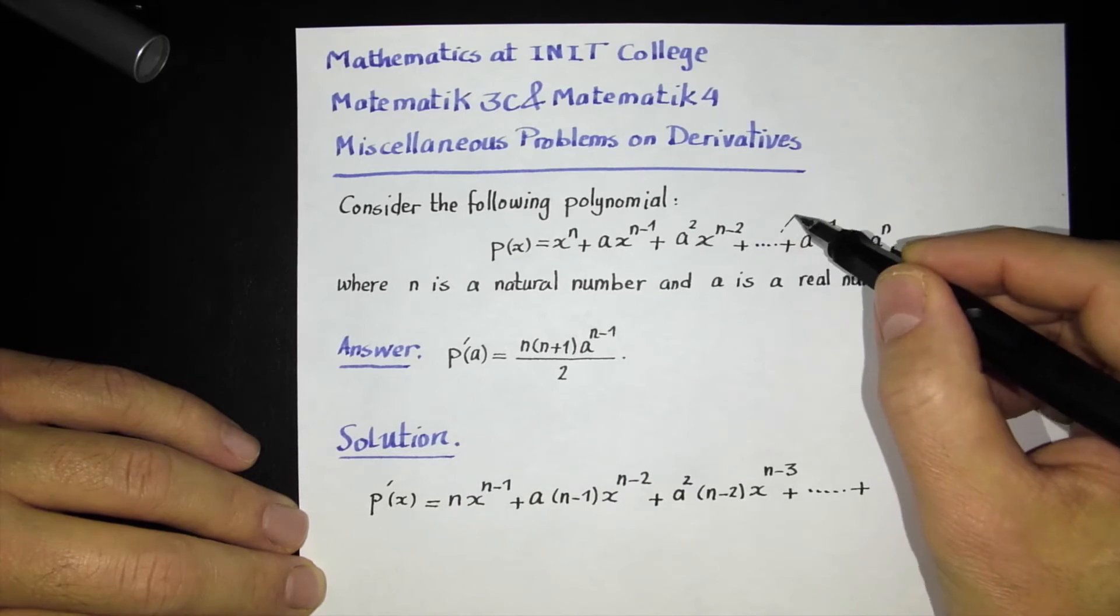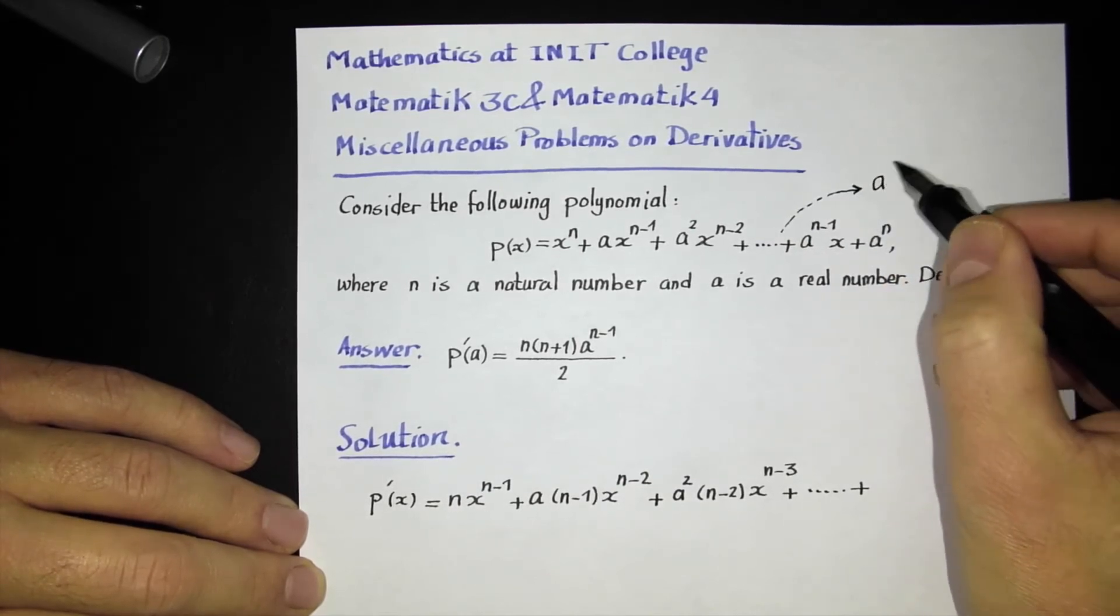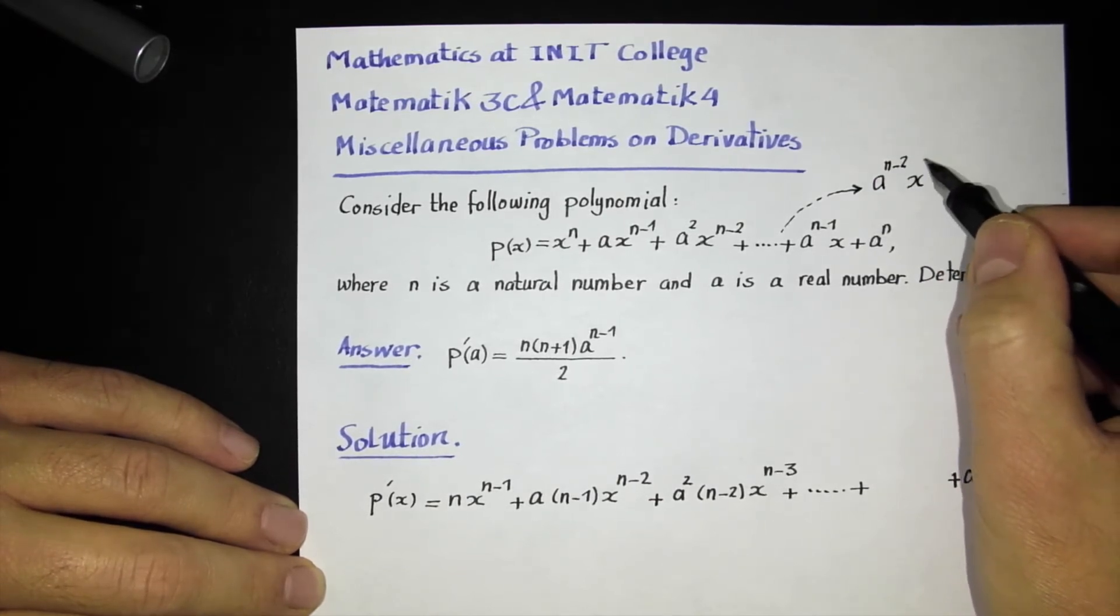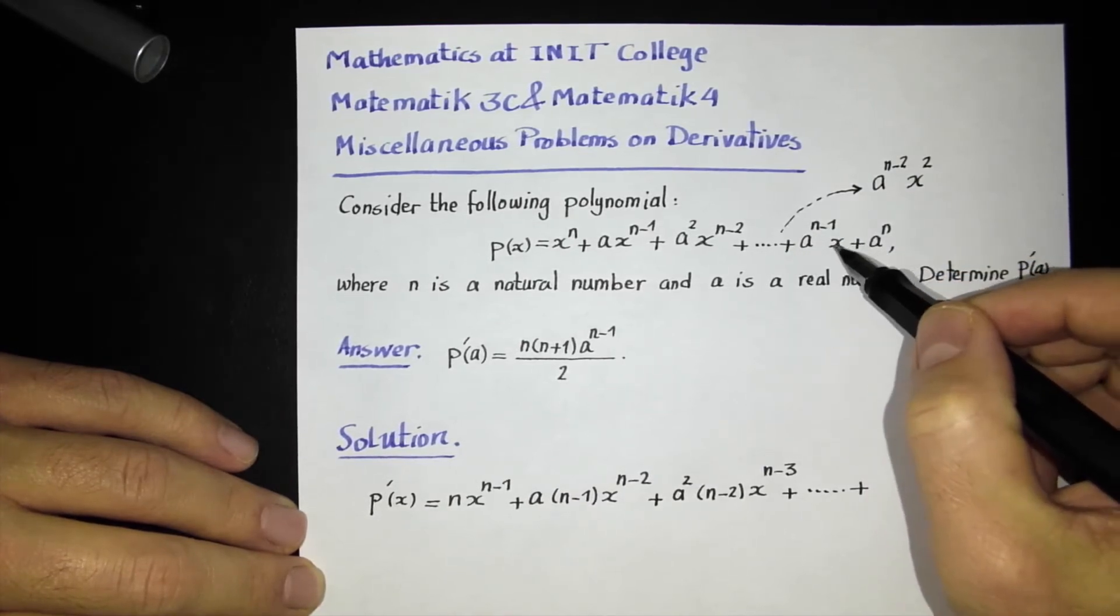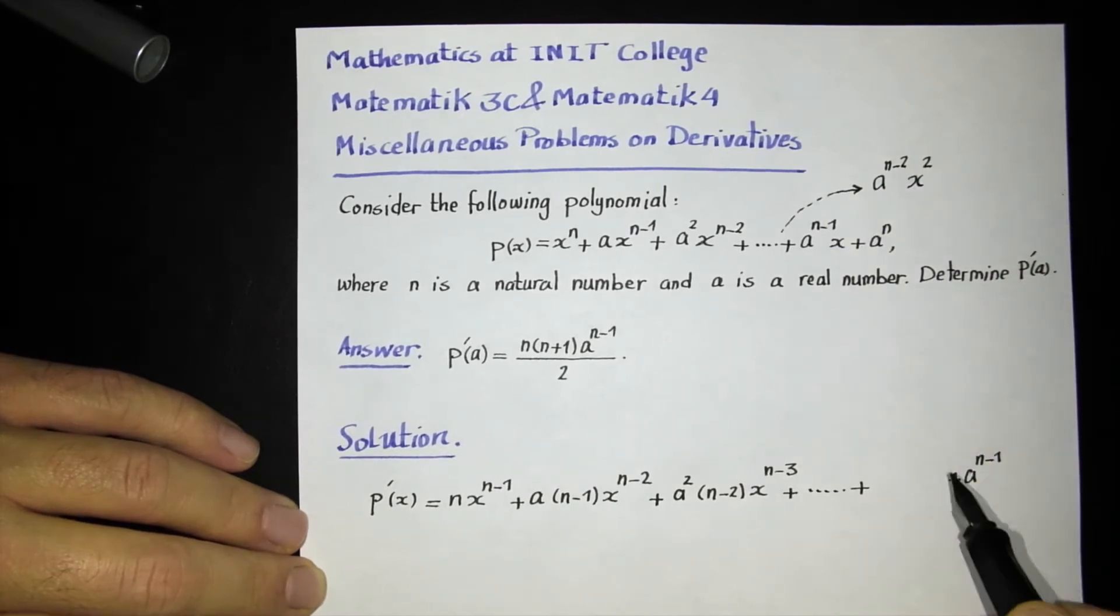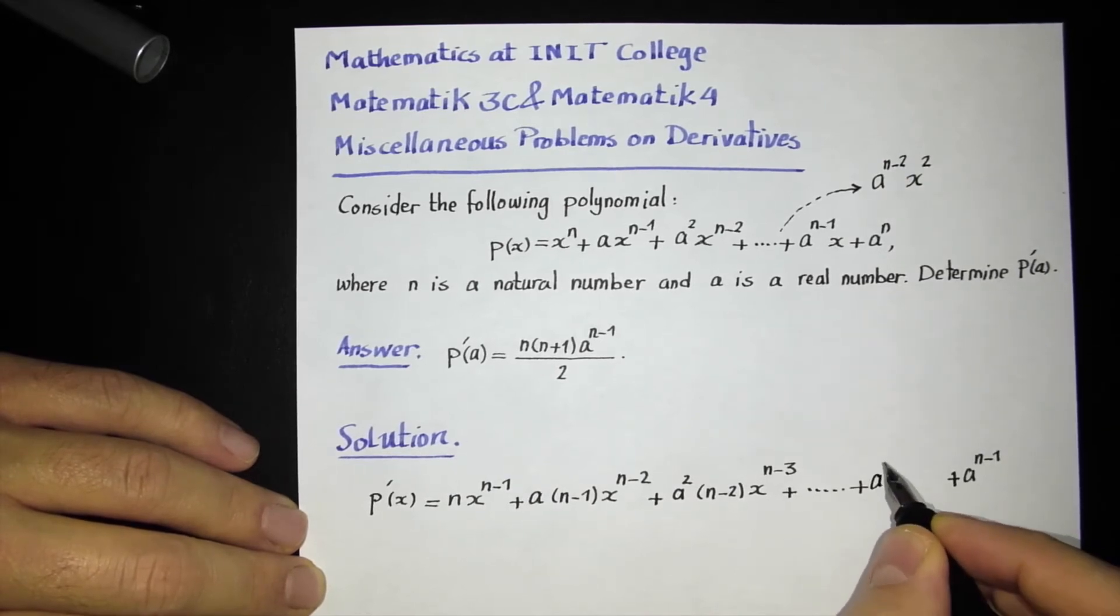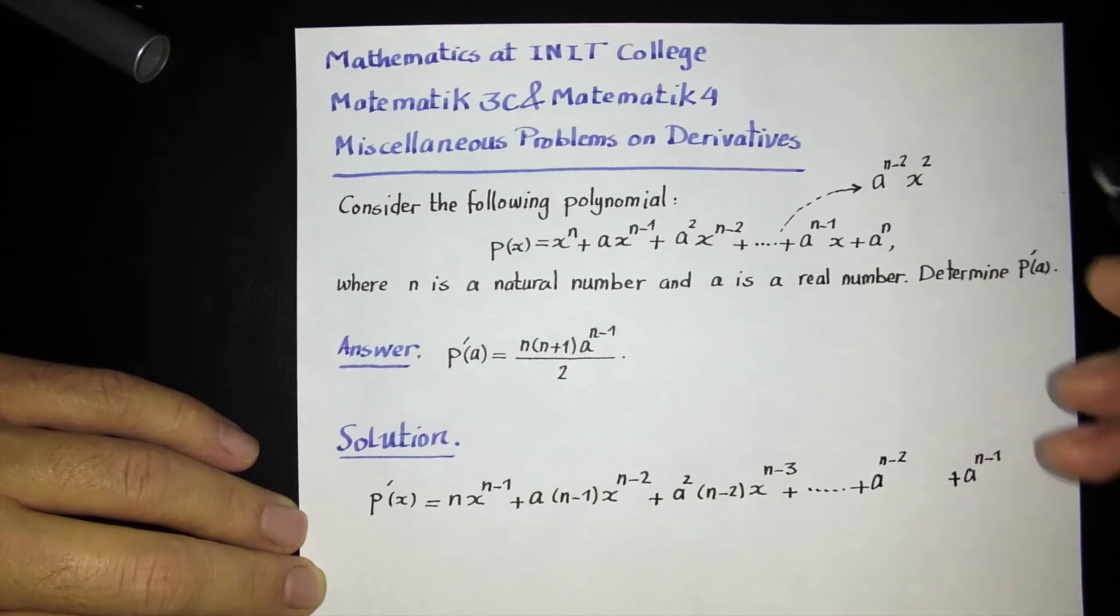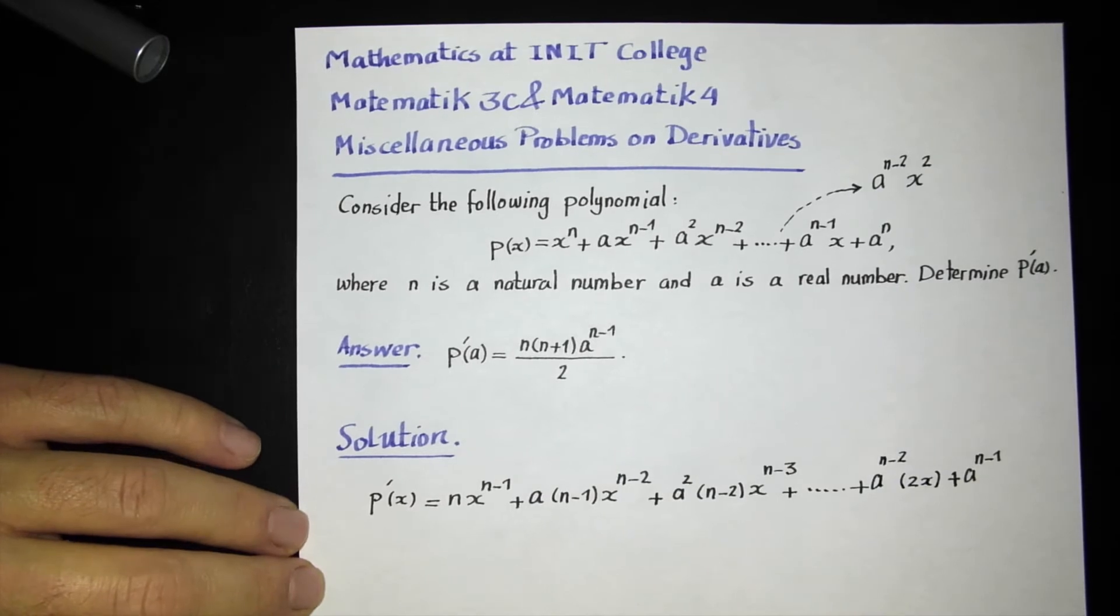What is the previous term here? The previous term is a to the n minus 2. It's instructive to write this previous term. Everyone can guess that the previous term exactly immediately before this is a to the n minus 2 times x squared. So the previous term, when I differentiate, a to the n minus 2 is my multiplicative constant. Then I differentiate x to the 2, so 2 goes down, and then I have x. So this is my derivative.